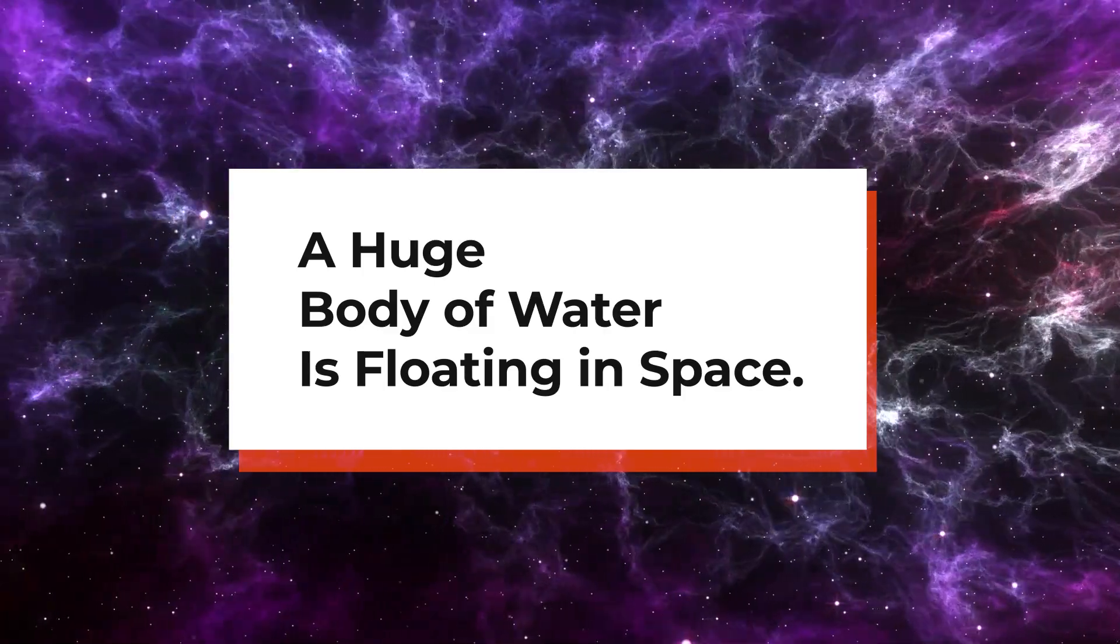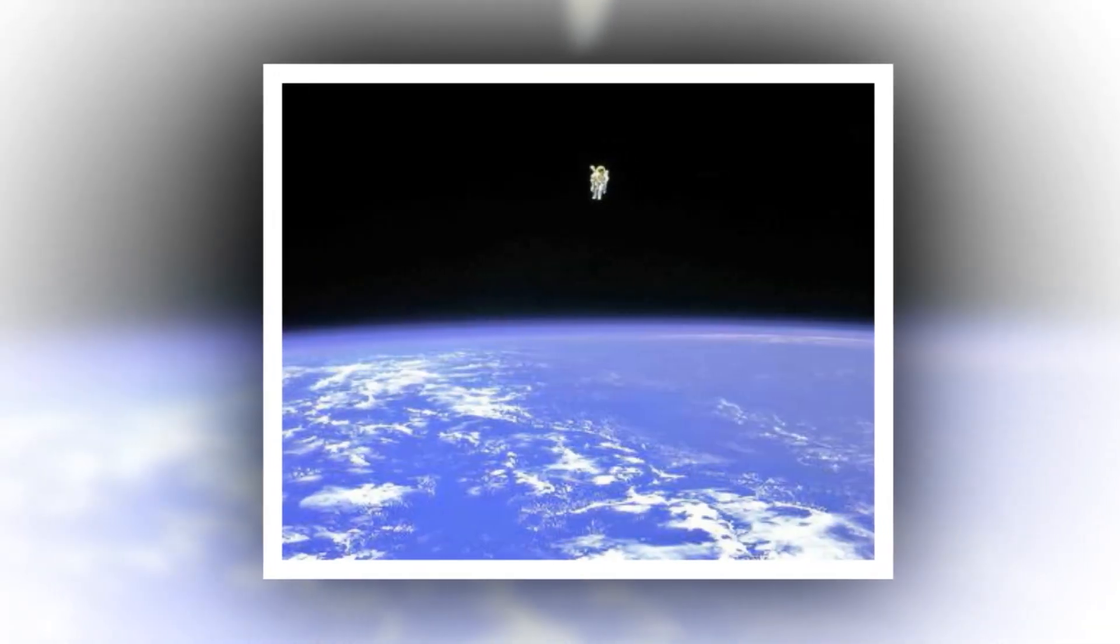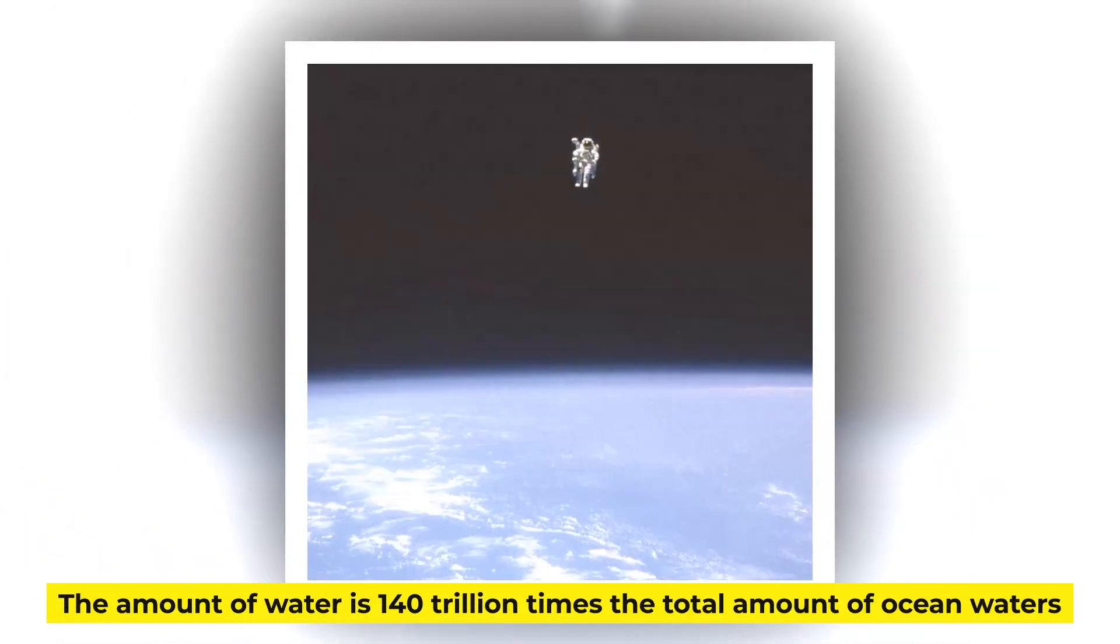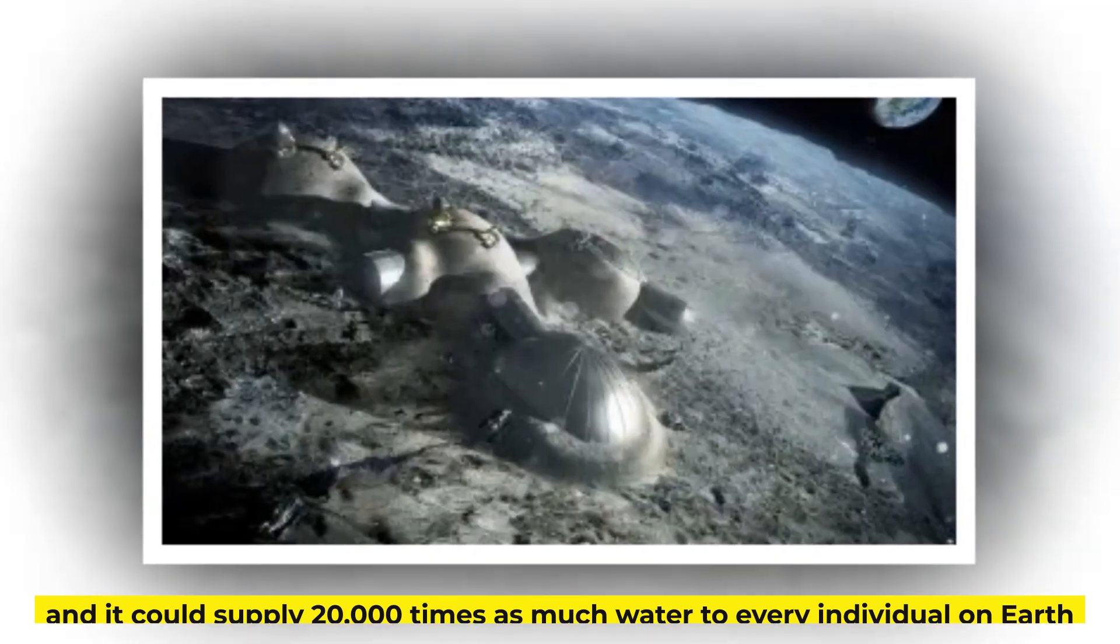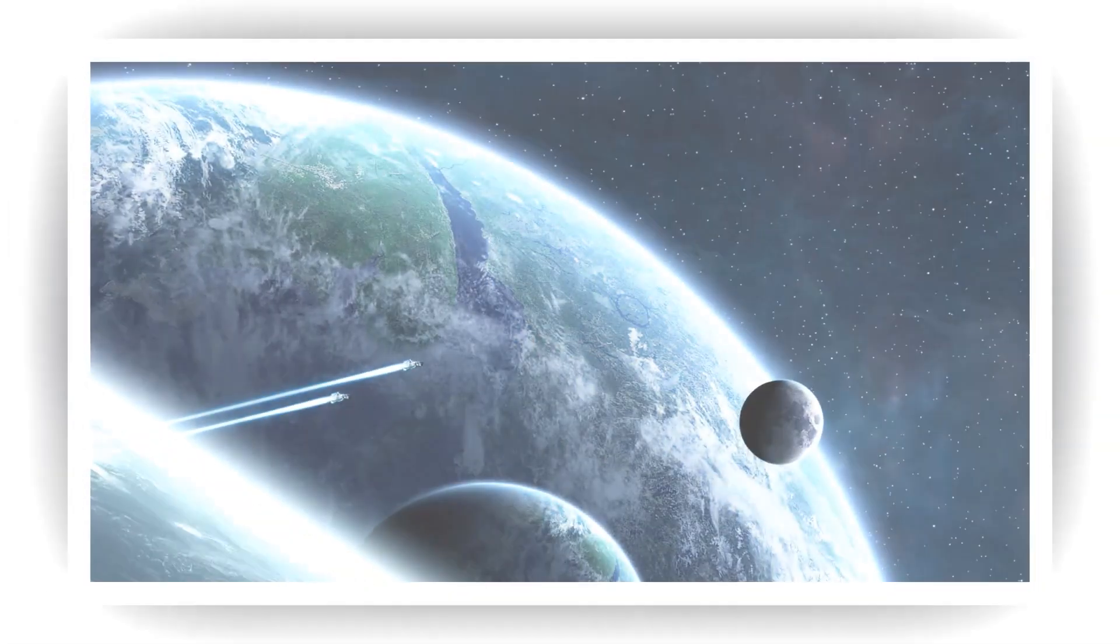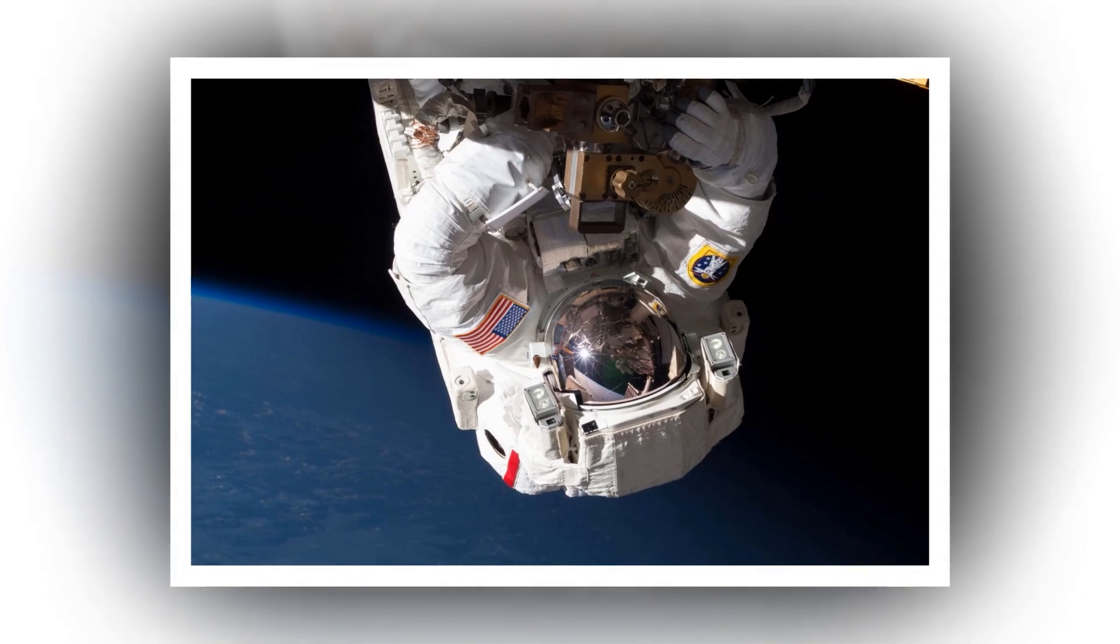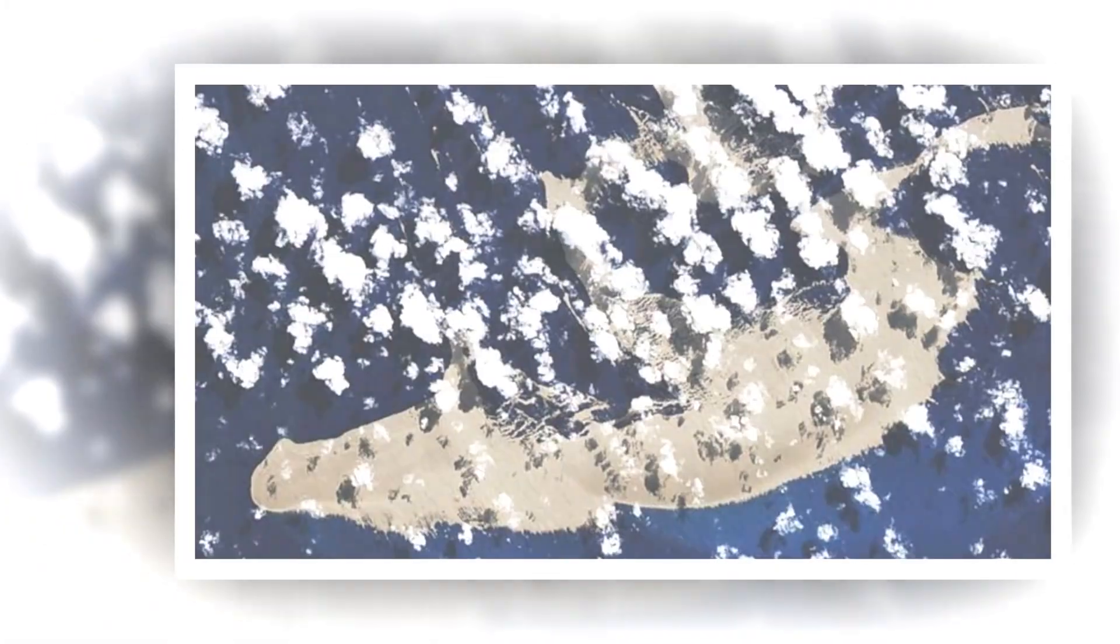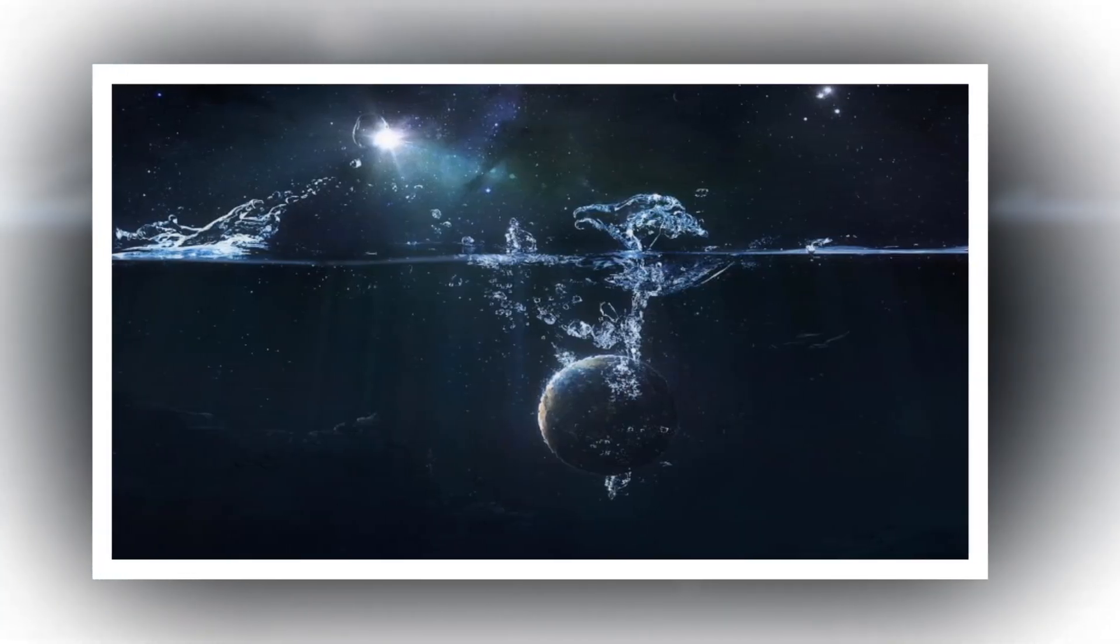Number 2. A huge body of water is floating in space. The largest and oldest known reservoir of water was detected floating across space in 2011, according to scientists. The amount of water is 140 trillion times the total amount of ocean waters, and it could supply 20,000 times as much water as every individual on Earth. Given that space is typically thought of as a barren, dry environment, this is an almost incomprehensibly large amount of water. The water was found near a massive black hole that is currently consuming matter and ejecting large quantities of energy, known as a quasar. Atoms of hydrogen and oxygen are knocked together by energy waves to form water. Given that this was discovered at 12 billion light years, it was probably happening at the beginning of the universe.